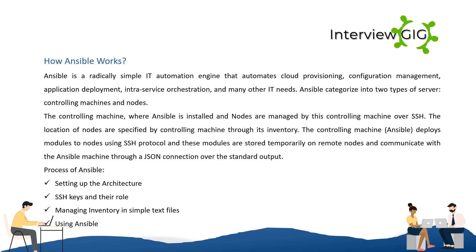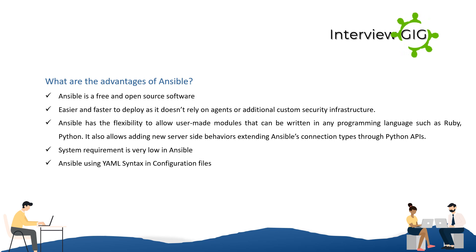The process of setting up Ansible architecture involves SSH keys and their role, and managing inventory in simple text files. What are the advantages of Ansible? Ansible is a free and open-source software, easier and faster to deploy as it doesn't rely on agents or additional custom security infrastructure. Ansible has the flexibility to allow user-made modules that can be written in any programming language such as Ruby or Python. It also allows adding new server-side behaviors extending Ansible's connection types through Python APIs. System requirements are very low in Ansible. Ansible uses YAML syntax and configuration files.